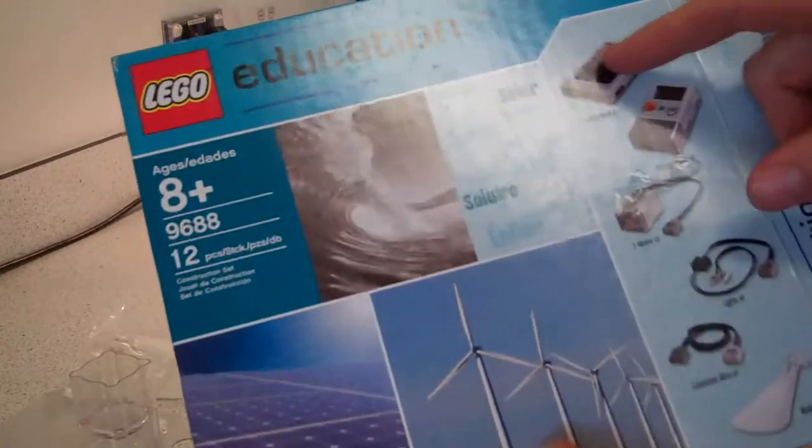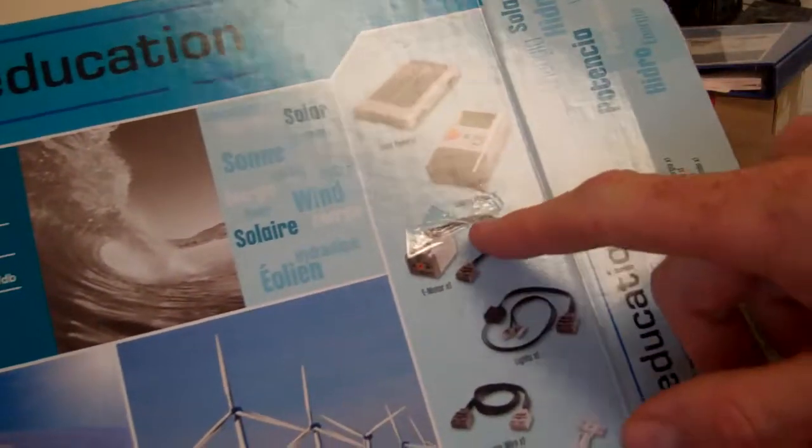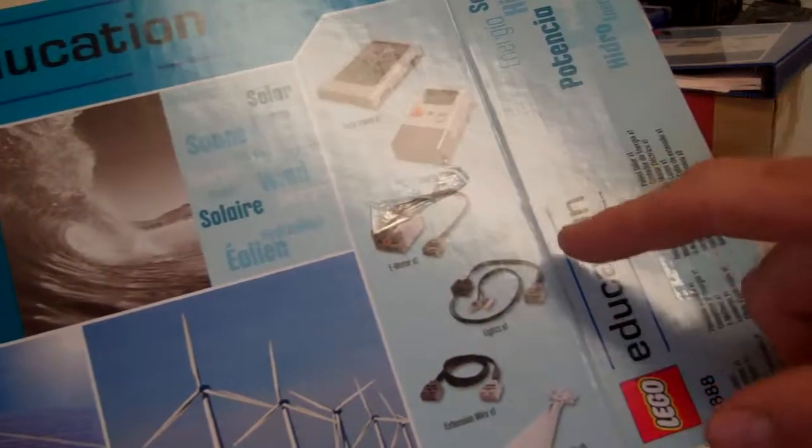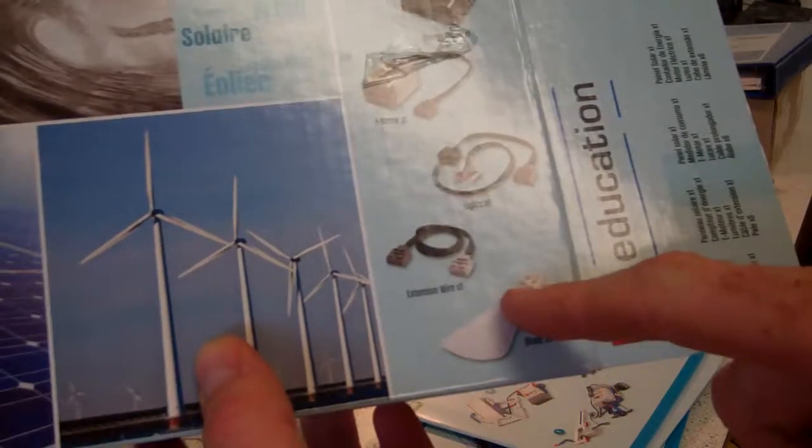The set includes a solar panel, a meter, a motor which also works as a generator, lights, connection cables, and fan blades.